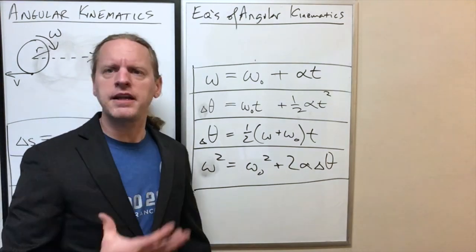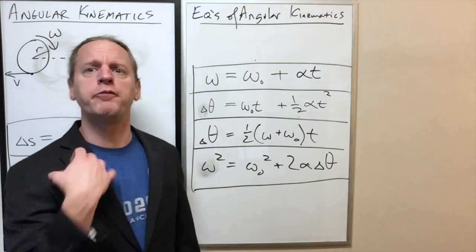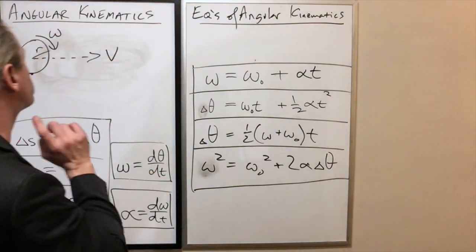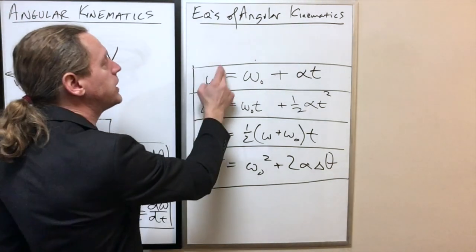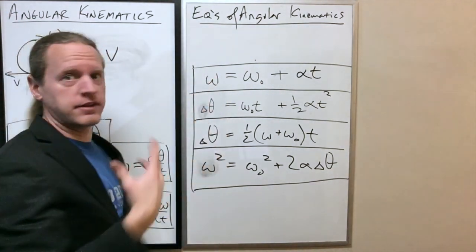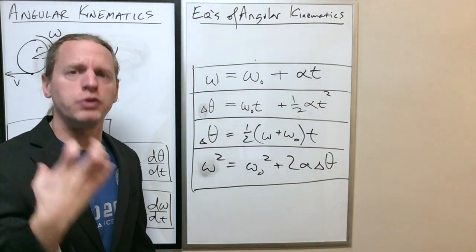Given that, let's talk real quickly about what happens if we're going in a circle and specifically if we keep our angular velocity omega the same - that's what we deal with when we have uniform circular motion.